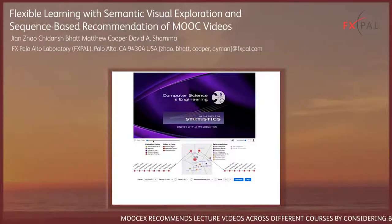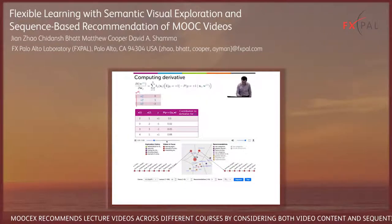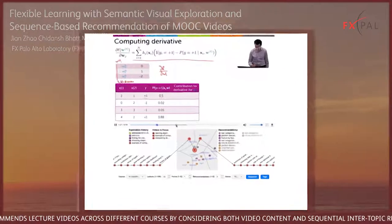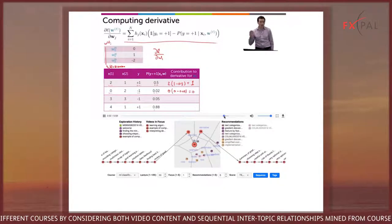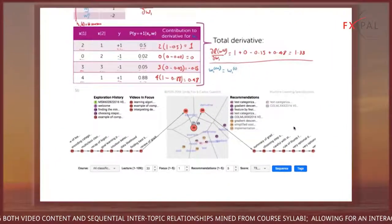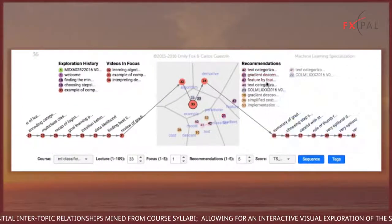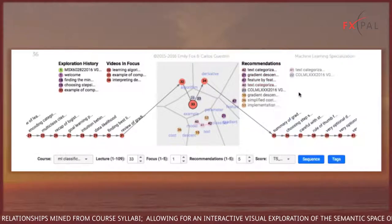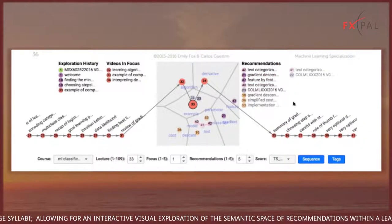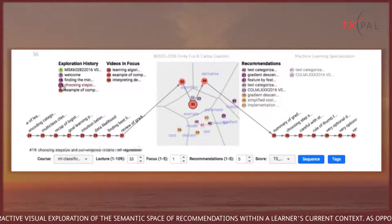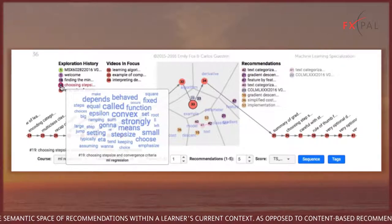MOOCX recommends lecture videos across different courses by considering both video content and sequential inter-topic relationships mined from course syllabi, allowing for an interactive visual exploration of the semantic space of recommendations within a learner's current context.